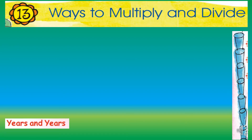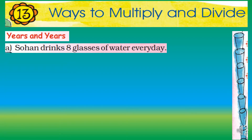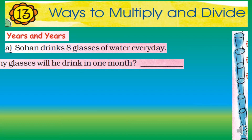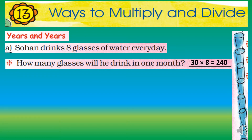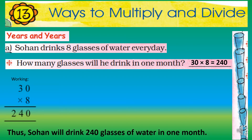Sohan drinks 8 glasses of water every day. How many glasses will he drink in one month? Since no specific month is given, we take 30 days. So 30 multiplied by 8 equals 240 glasses. Here is the working: 30 multiplied by 8 — 8×0 is 0, and 8×3 is 24 — so that equals 240. Thus Sohan will drink 240 glasses of water in one month.